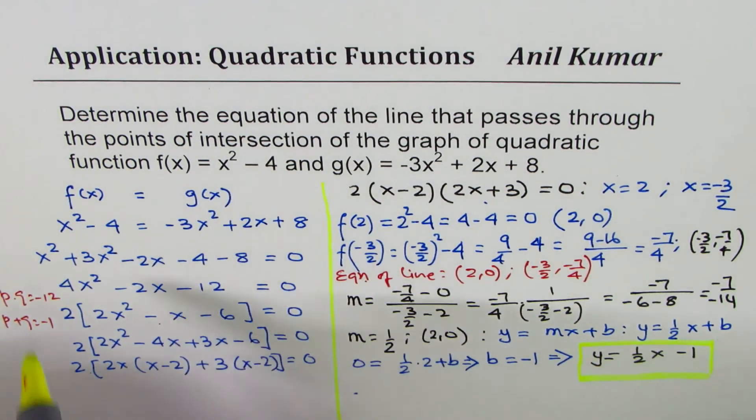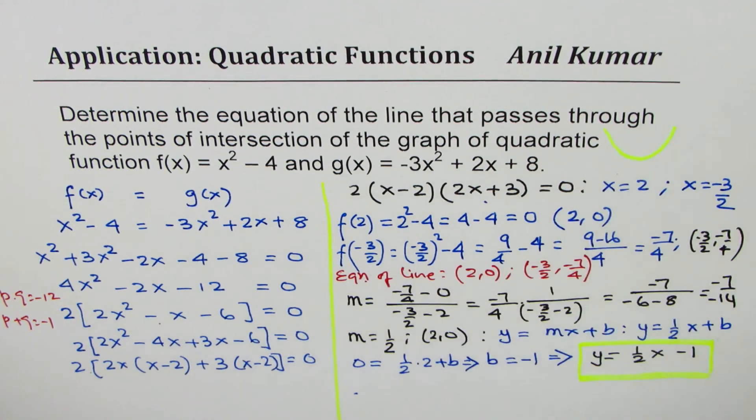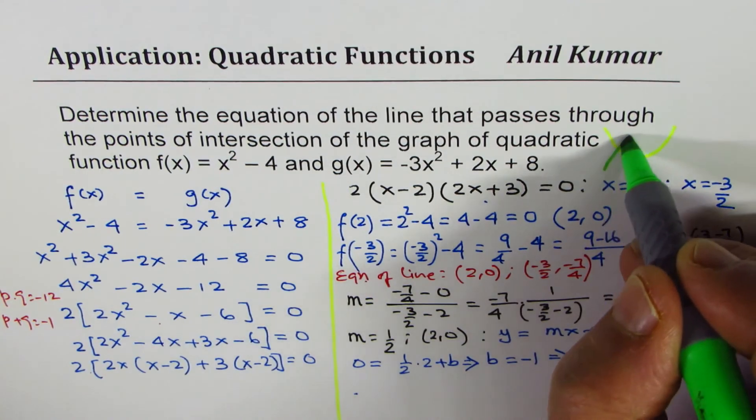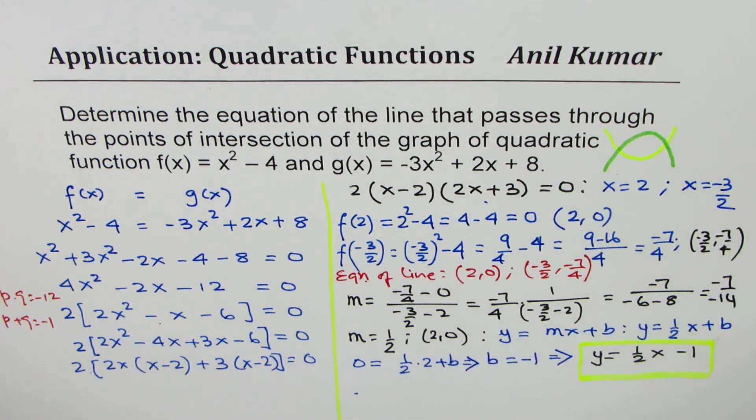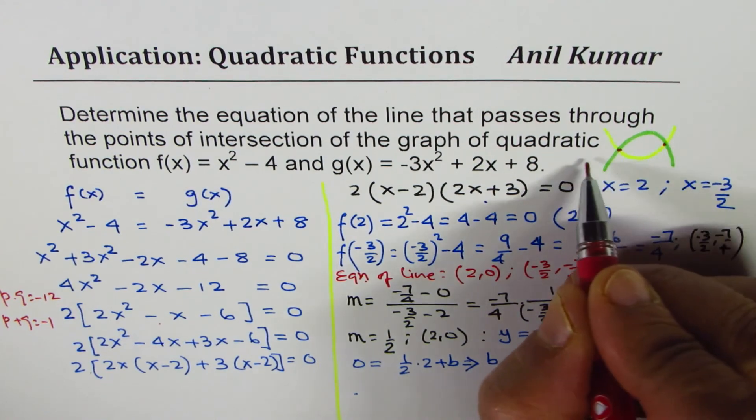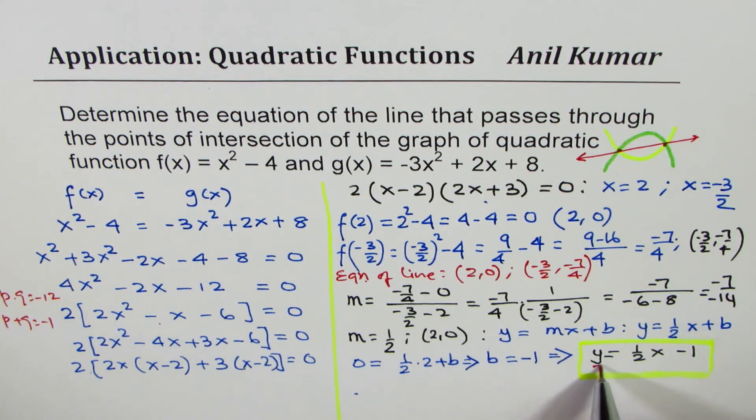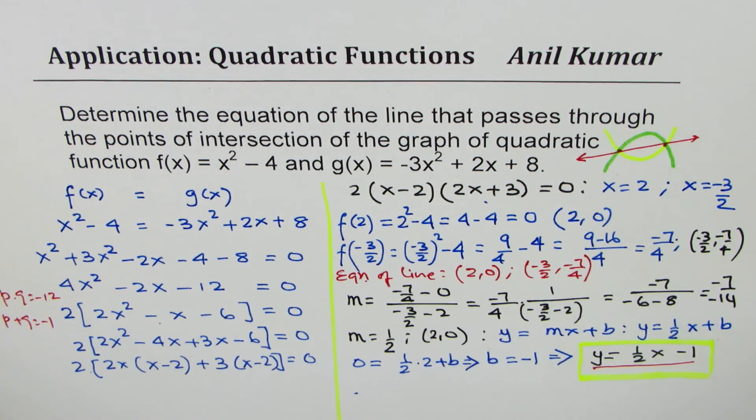So we had two parabolas, x² - 4, and the other parabola is opening downwards. These were the points of intersection, and if you join them, you get a line. The equation of this line is (1/2)x - 1. I'd like you to go through the video once again, understand the strategies and how we came across this particular equation of the line.